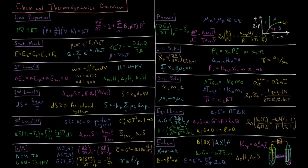We can move to more advanced equations of state which do not assume that the particles are non-interacting, like the van der Waals equation of state: P plus a parameter for attractions A over molar volume squared, times molar volume minus a parameter B for the repulsions between molecules — their effective molecular size — equals RT.